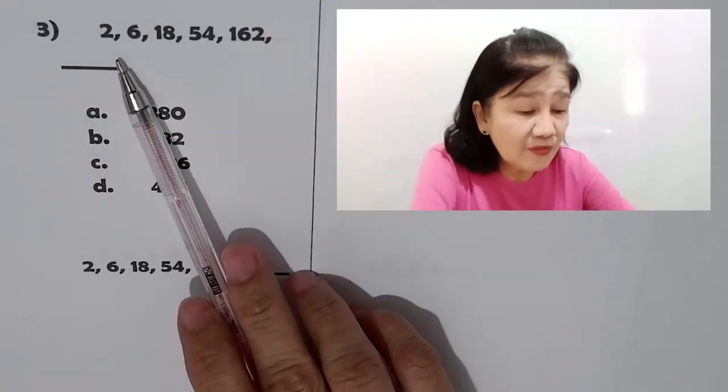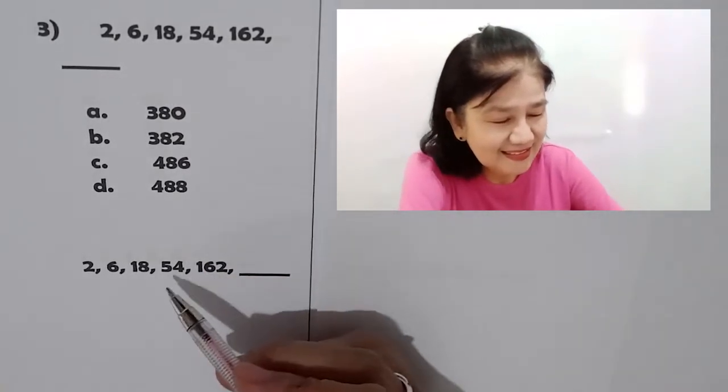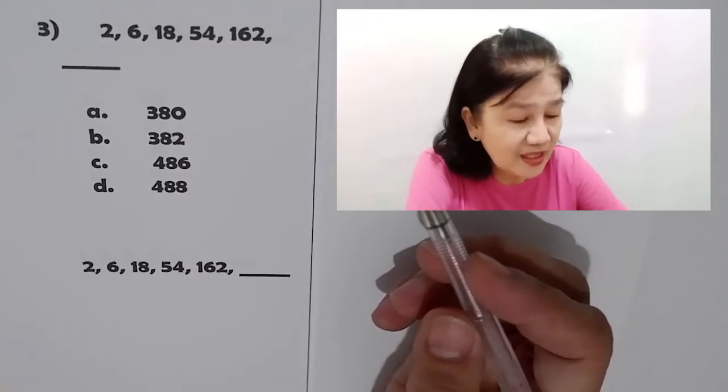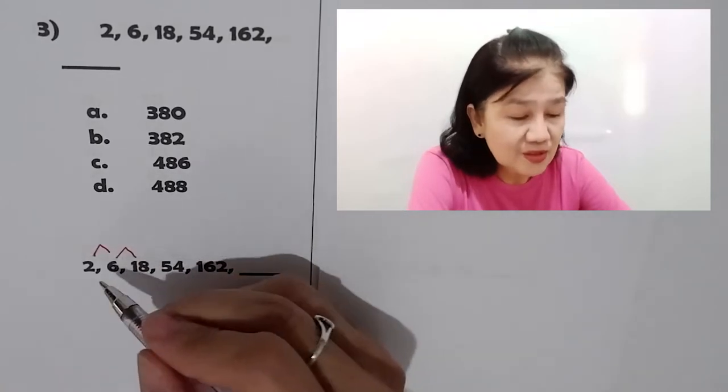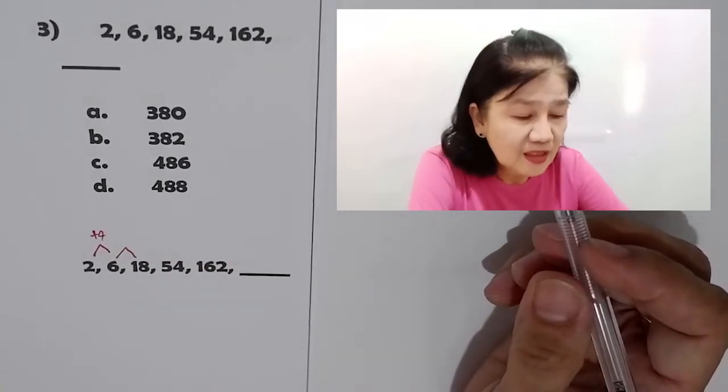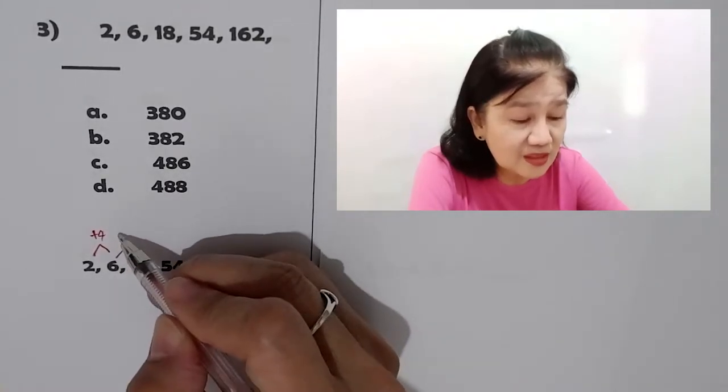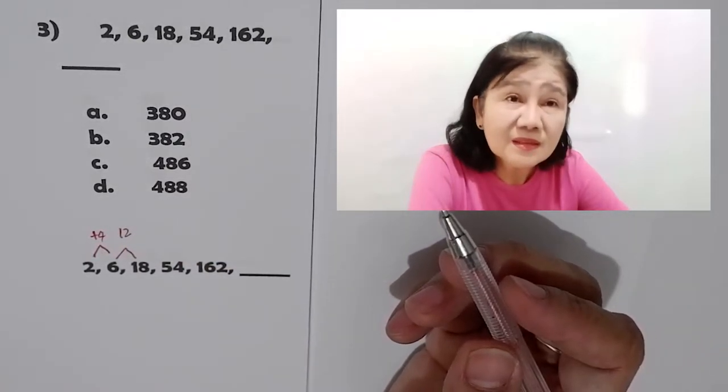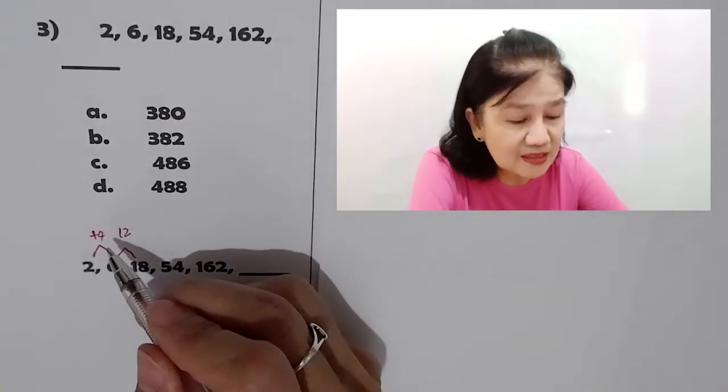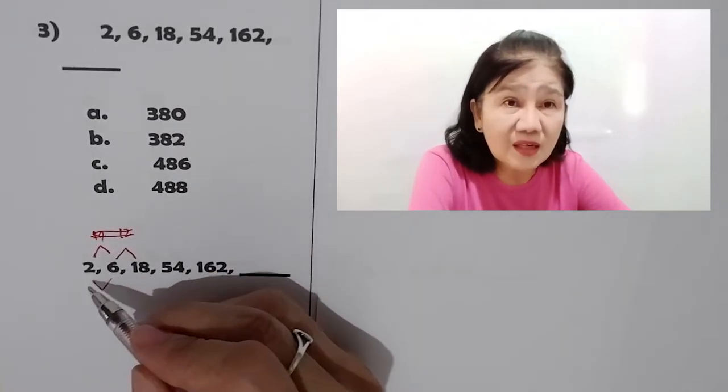Now, problem number 3. We have here 2, 6, 18, 54, 162 blank. So, let's try to see if there is a pattern here. So, 2 plus 4 is 6. 6 plus blank will give us 18 or 18 minus 6 is 12. Do we see a pattern? Medyo mahirap, di ba? If that's the case, erase that. Think of another way on how you can get 6 out of 2.